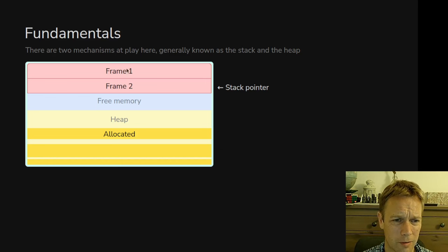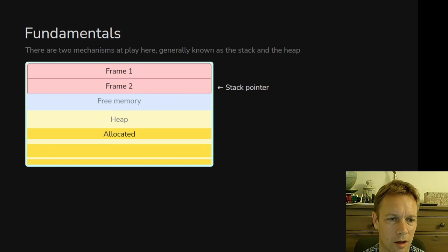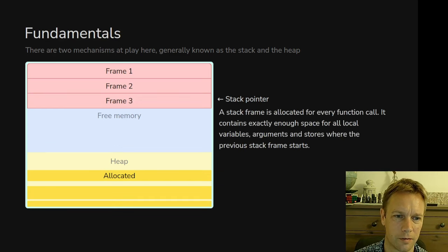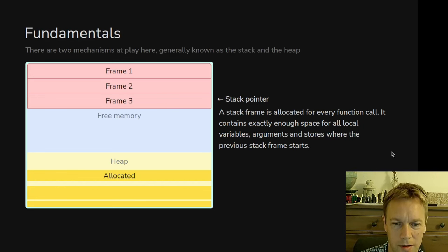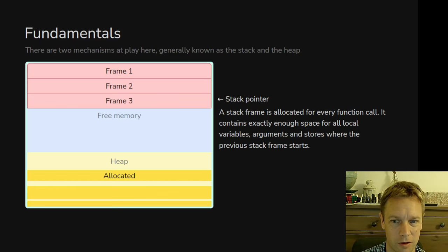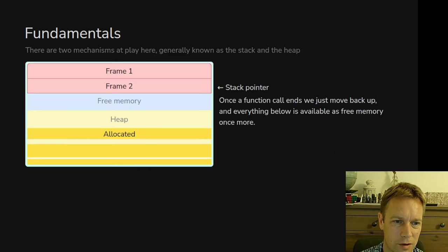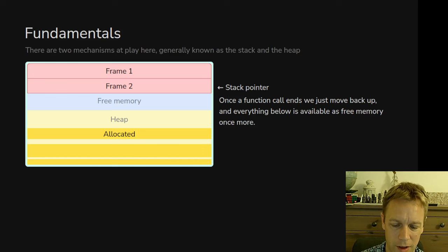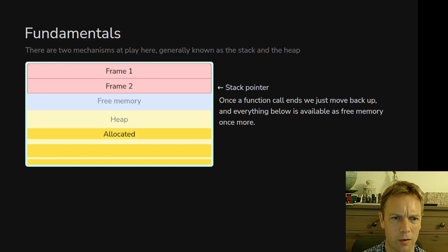In this diagram we've got two functions that have been called — frame one and frame two, two chunks of stack that have been used so far. When we need another bit of memory on the stack we add another frame and the stack pointer moves down to point at the bottom of the stack. The stack frame is exactly enough memory for the stuff happening in this function call. When that function call is finished, we just get rid of frame three and go back to the stack pointer pointing at the bottom of frame two.